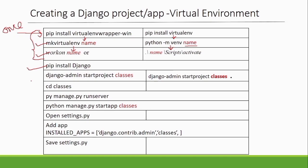After installing Django, you create a Django project. The command is `django-admin startproject` followed by the name of the project. You can name it anything — classes, courses, e-commerce, blog, whatever you want. The name will change depending on your project.